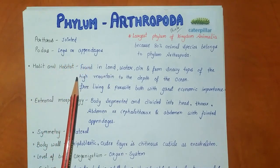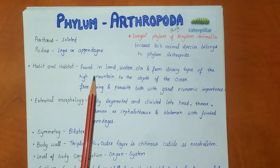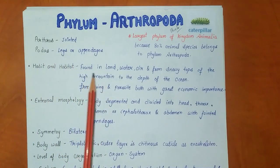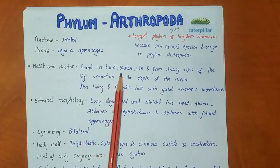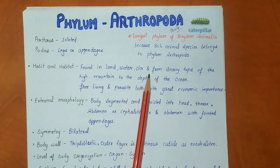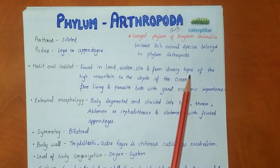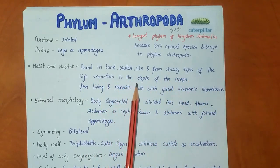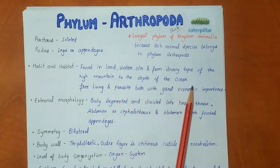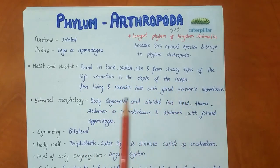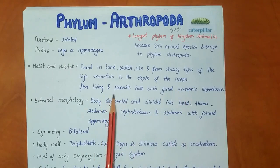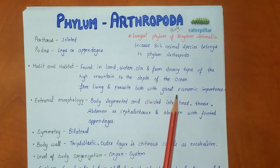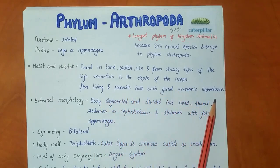Regarding habit and habitat, they are found almost everywhere — found in land, water, and air, from the snowy tops of high mountains to the depths of the ocean. They are free-living and parasitic, both with great economic importance.